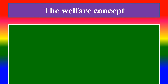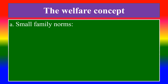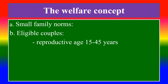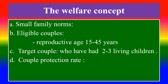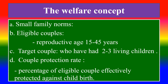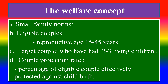The welfare concept in family planning includes: A — small family norms; B — eligible couples in the reproductive age of 15 to 45 years; C — target couple, referring to those who have had 2 to 3 living children; and D — couple protection rate, which is the percentage of eligible couples effectively protected against childbirth.